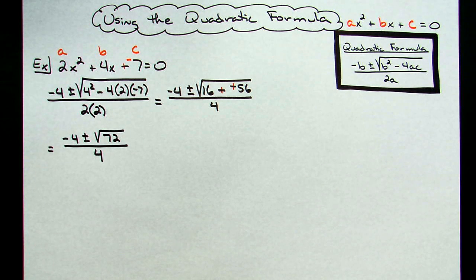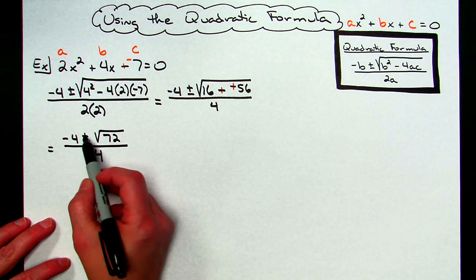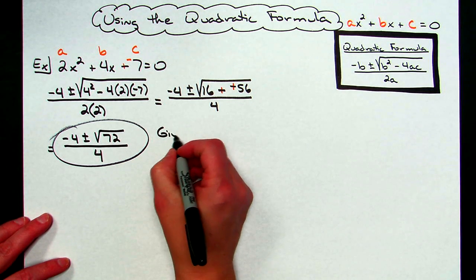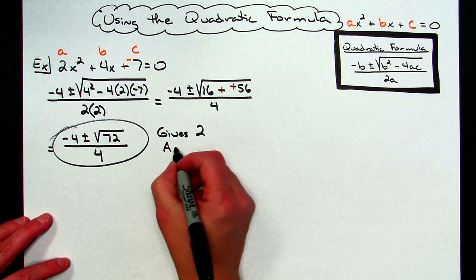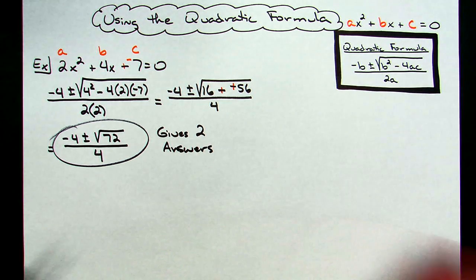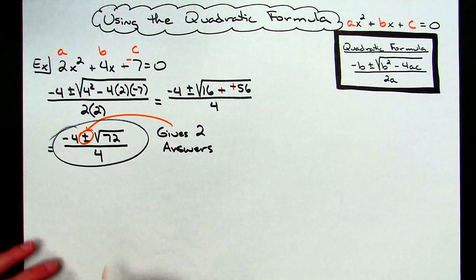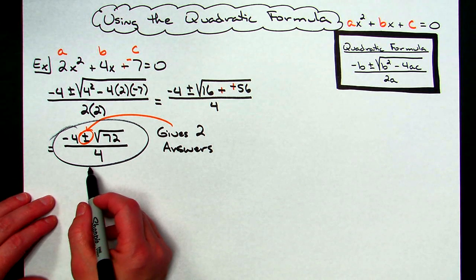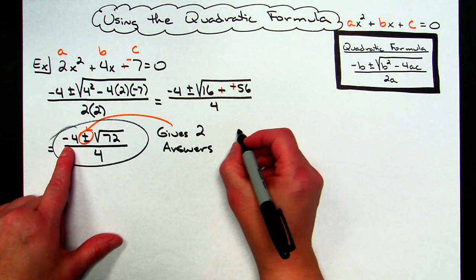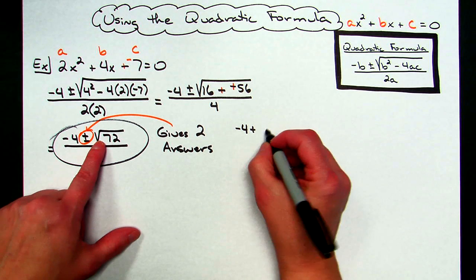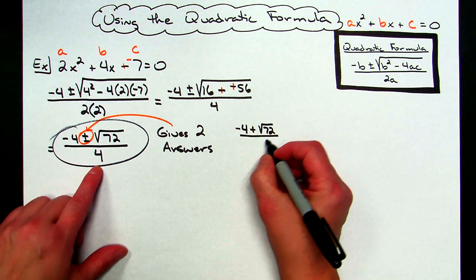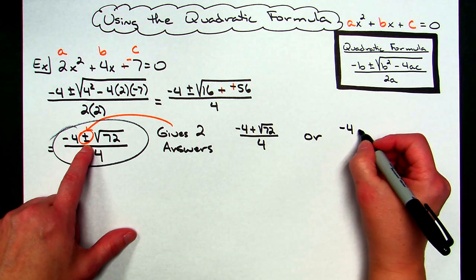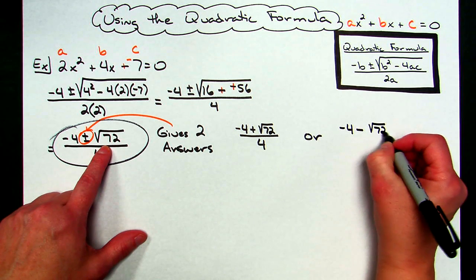Now I need to handle the plus or minus. At this point, that expression gives two answers because of the plus or minus sign. So I'll break the expression into two different answers. For the first one: negative 4 plus the square root of 72, all over 4. For the second answer: negative 4 minus the square root of 72, all over 4.